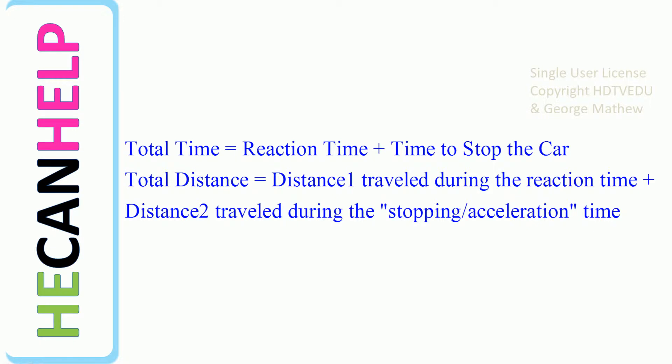What is the reaction time? It takes a little time for us to react to something that we see on the road. So during that reaction time, we are actually moving. And once the reaction time has passed, then we apply the brakes. So we have Distance 1, traveled during the reaction time, and we have Distance 2, traveled during the stopping or the acceleration time.